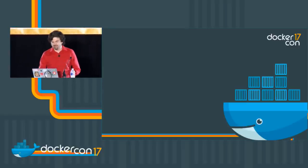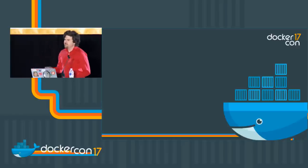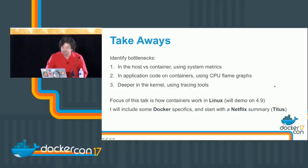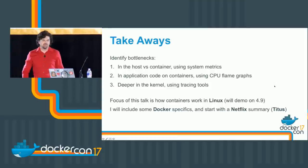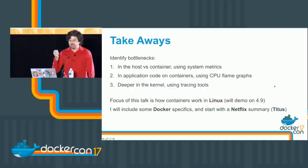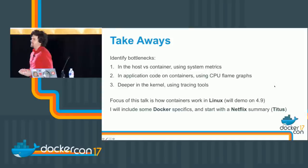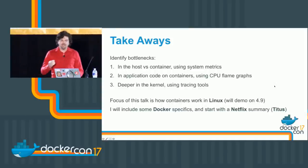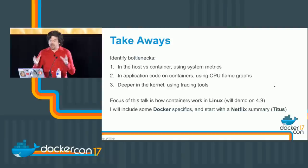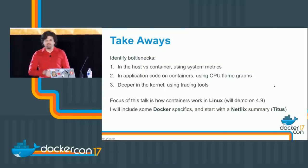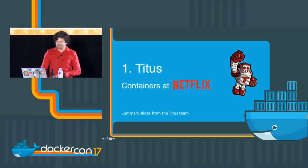G'day, my name is Brendan. I work at Netflix. I'm going to show you how to identify bottlenecks in a container environment — whether in the host or container using system metrics, using flame graphs to understand application code in a container environment, and deeper in the kernel using tracing tools. I'm going to focus on how this works on Linux using 4.9, a recent version. I'll include some Docker specifics, and I'll start with a summary of how we do this on Netflix with Titus.